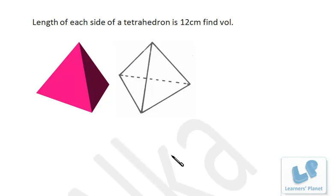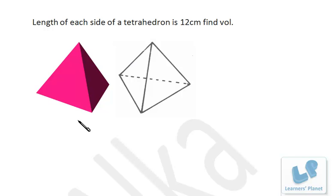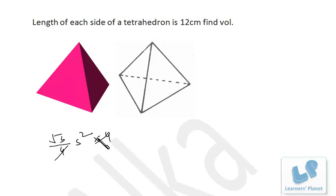Now we have a tetrahedron where the length of each side is 12 cm. We have to find its volume. A tetrahedron is a combination of 4 equilateral triangles — 3 on the sides and 1 at the base, all congruent. Let's derive the formula for its surface area and volume. For curved surface area there are 3 equilateral triangles each with area (√3/4) × side², multiplied by 3. For total surface area, multiply by 4.